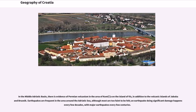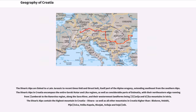There are comparably small alluvial areas of the Adriatic coast in Croatia, most notably the Neretva river delta. Western Istria is gradually subsiding, having sunk about a certain amount in the past 2,000 years. In the middle Adriatic basin, there is evidence of Permian volcanism in the area of Komiža on the island of Vis, in addition to the volcanic islands of Jabuka and Brusnik. Earthquakes are frequent in the area around the Adriatic Sea, although most are too faint to be felt; an earthquake doing significant damage happens every few decades, with major earthquakes every few centuries.